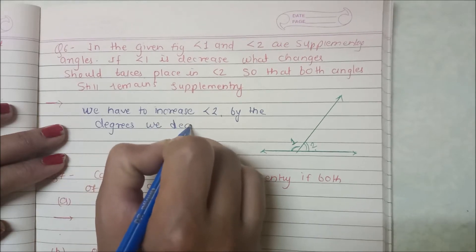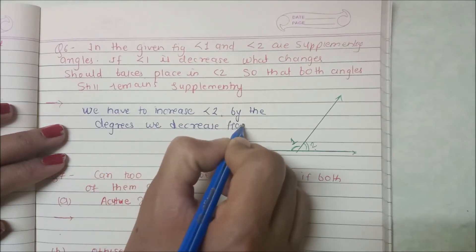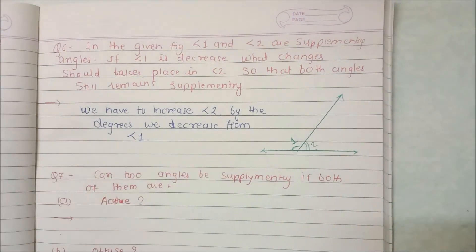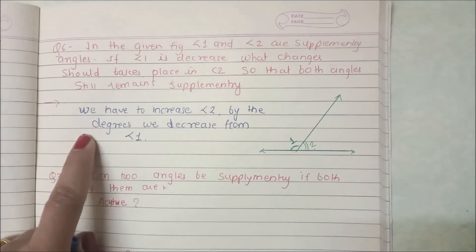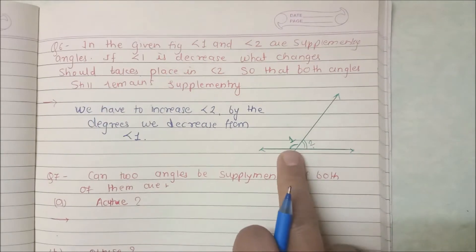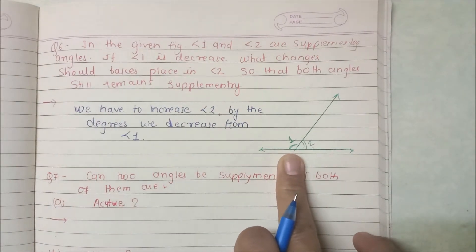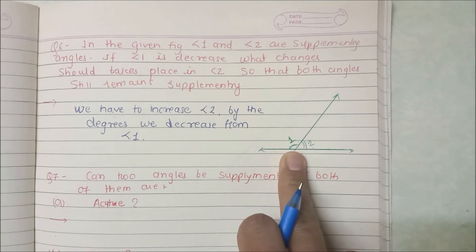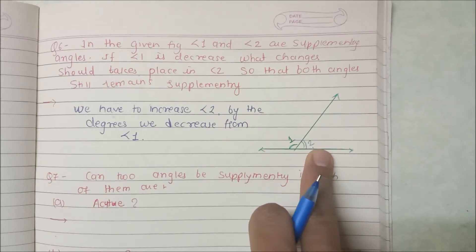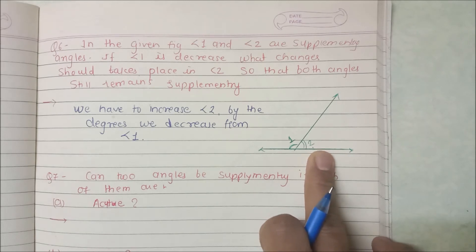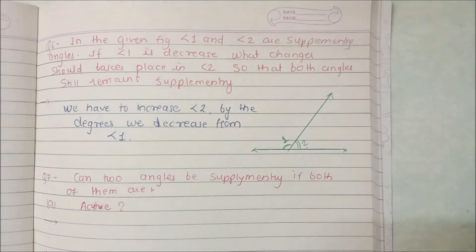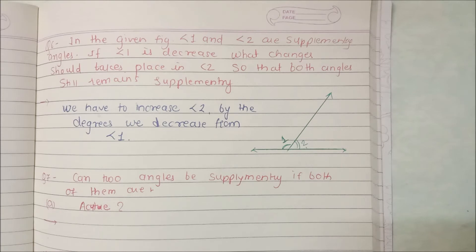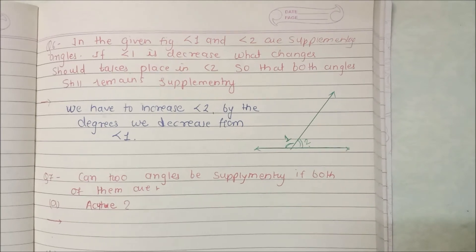We decrease from angle 1. The answer is that we must increase angle 2 by the same degrees as we decrease angle 1. Here, angle 1 was 120 and I made it 90, meaning I subtracted 30 from it. If I subtracted 30 from angle 1, I must add 30 to angle 2. Adding 30 to angle 2 makes it 90, and both 90 and 90 together give 180 degrees. So the answer is: by however many degrees you decrease angle 1, you must increase angle 2 by the same degrees.